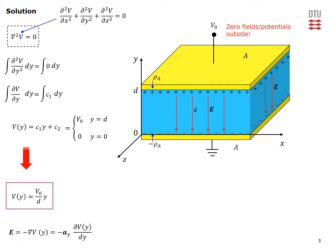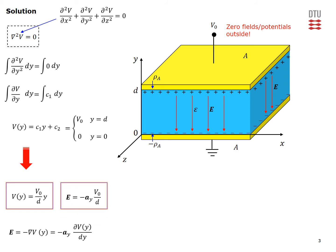Knowing the potential, we can take the negative gradient, which in this case is given by the explicit expression shown here. So knowing the electric field, we can by using the material or constitutive equation for our simple material also easily get the D field.